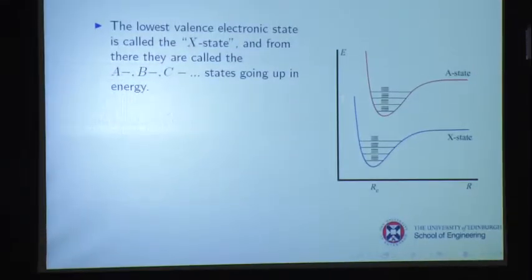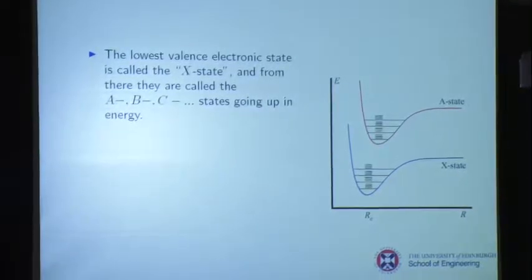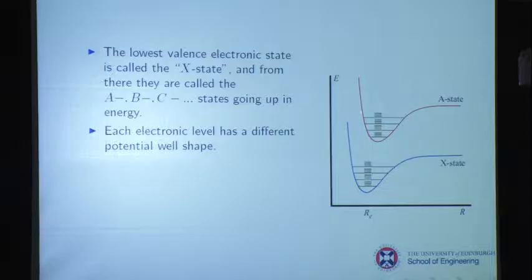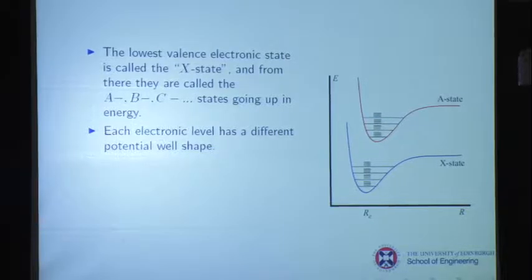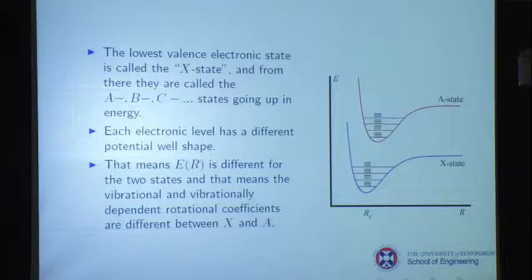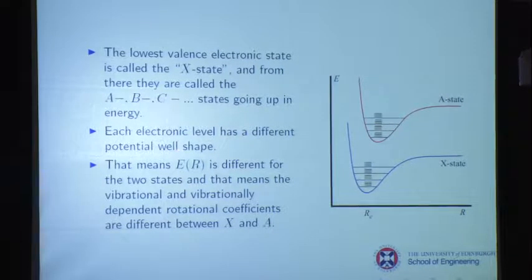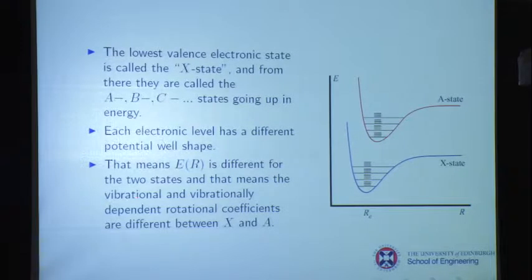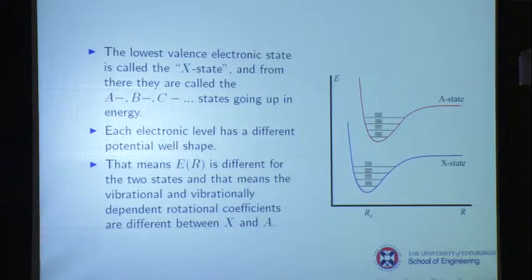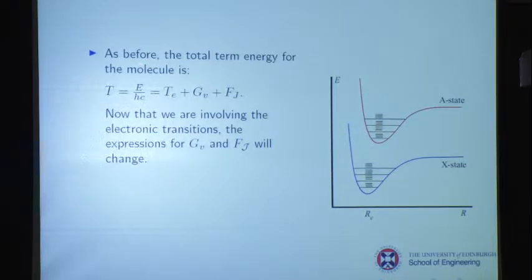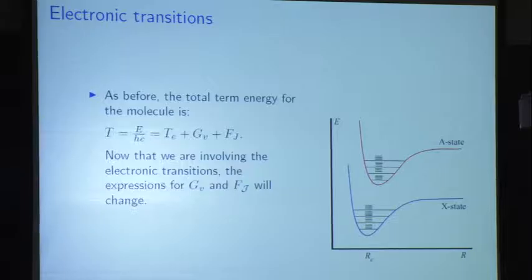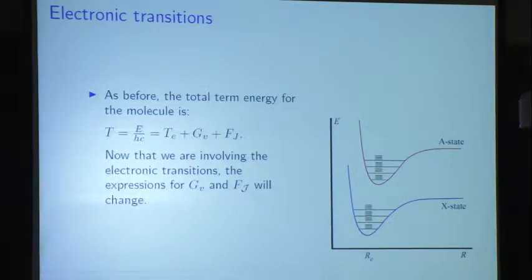For electronic transitions, we have the X state which is the lowest level, then the A state, B state, and so forth. I purposely drew the potential well shapes a little differently and shifted one over, because somebody was asking about the Franck-Condon factors — that shift can have a big effect on them. This means the potential energy function is different for the two states, so the vibrational and vibrationally-dependent rotational coefficients will be different between them. As before, we write the term energies, but now we involve the electronic transitions, and these expressions will change.